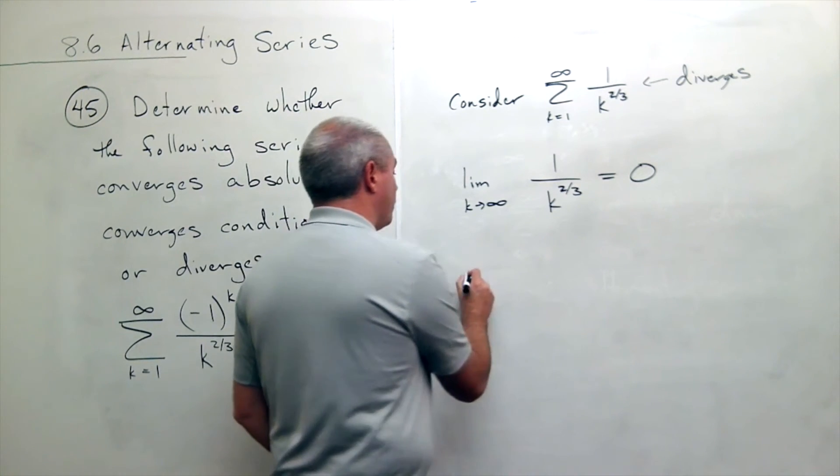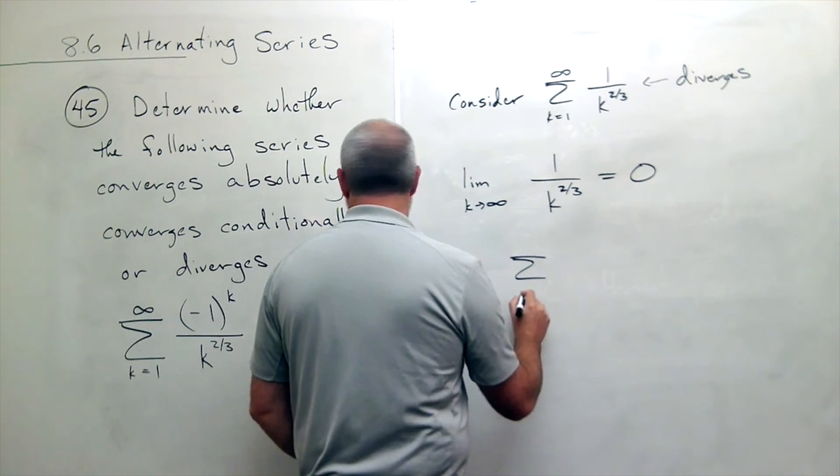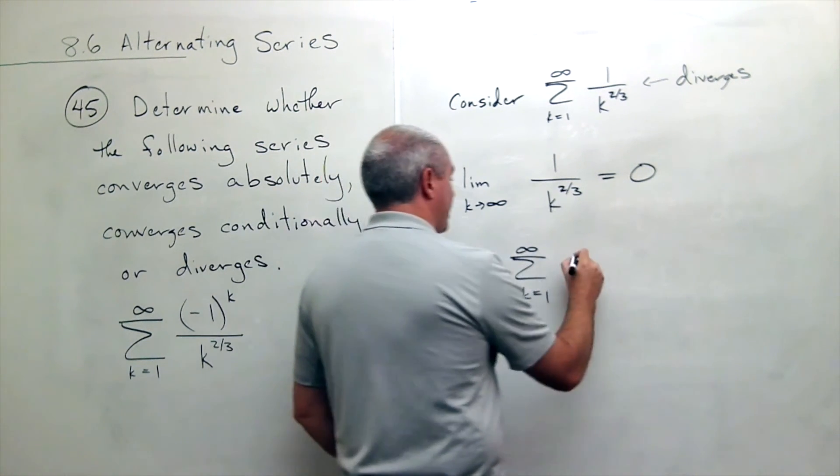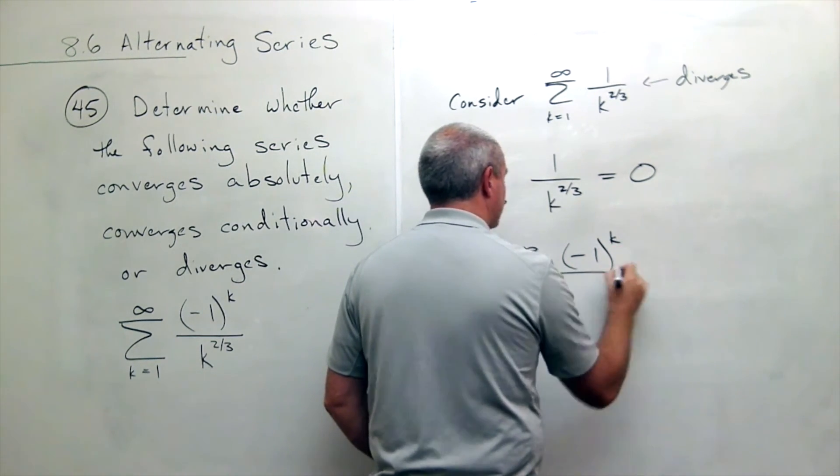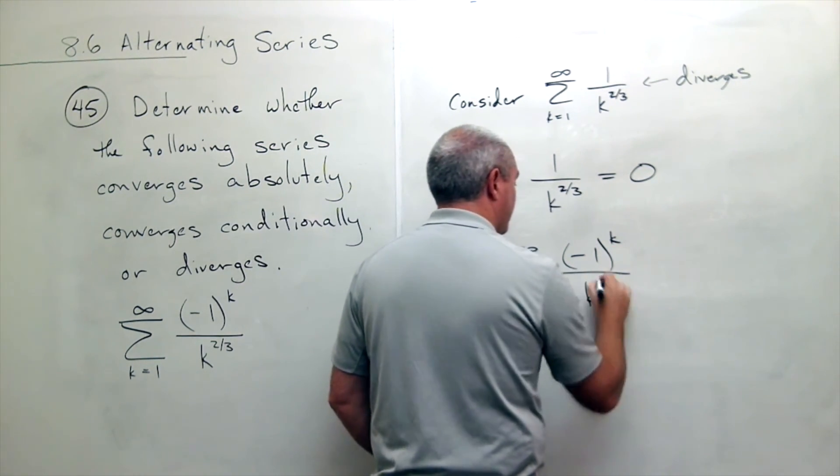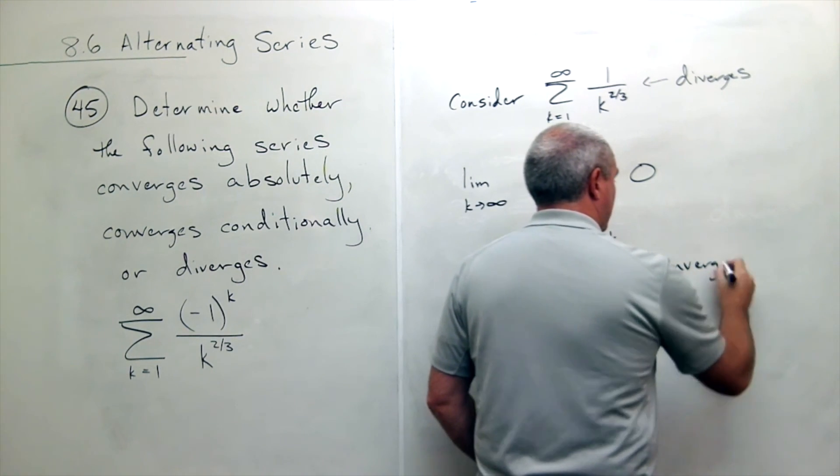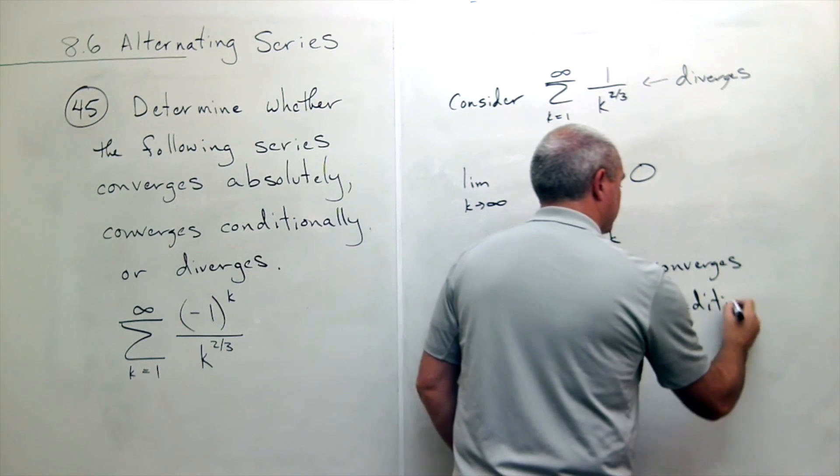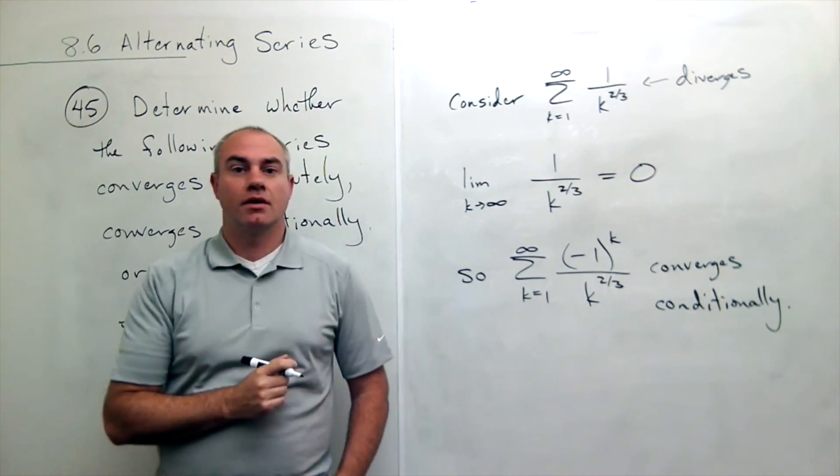So I can say that the sum k going from 1 to infinity of negative 1 to the k divided by k to the 2/3 converges conditionally. And we are done.